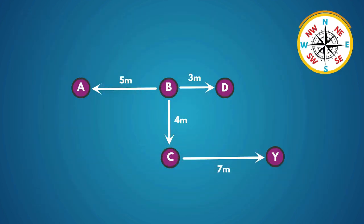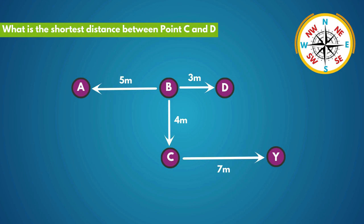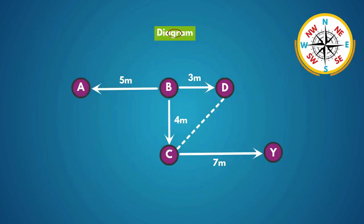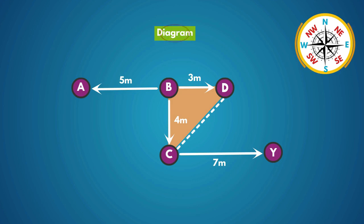This is the final diagram. Now, in the question they are asking what is the shortest distance between point C and D? In the diagram, point B, point D, and point C form a right-angled triangle, that is triangle B, D, C.